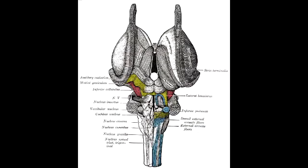What is the inferior colliculi? The inferior colliculi is the principal midbrain nucleus of the auditory pathway and it receives input from several peripheral brainstem nuclei in the auditory pathway as well as input from the auditory cortex. Its main purpose is for auditory processing.